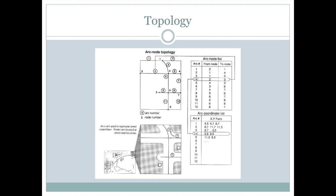Topology means that GIS layers are built with smart lines. In this example, we see a line layer. This could, for example, represent roads as shown on this map here.